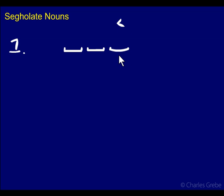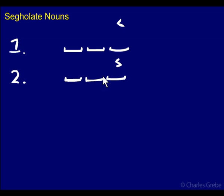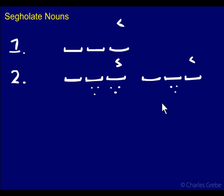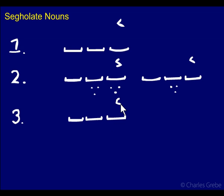Stress on the first syllable. The second definition of segolate nouns is that they have segol in one or both root letters — either both of them or just one; it tends to be the second one if it's just one. The third definition is really just an application: if they have gutturals, then they will tend to have patach.